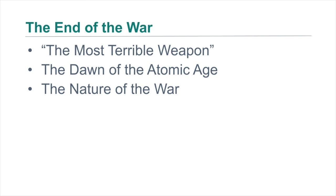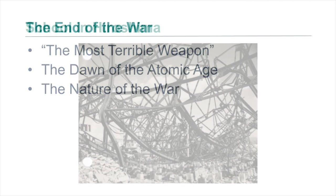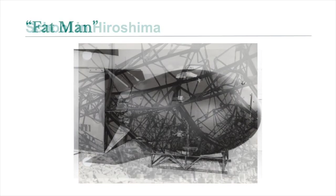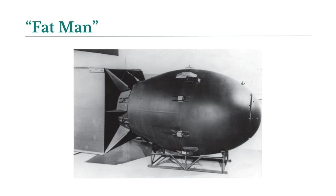Although the war and government propaganda led many Americans to dehumanize the Japanese, and few criticized Truman's use of the bomb, public criticism aroused by images of civilian suffering mounted. This is an image of a school in Hiroshima after the bomb. This is Fat Man, the atomic bomb dropped on Nagasaki, Japan, on August 9, 1945.